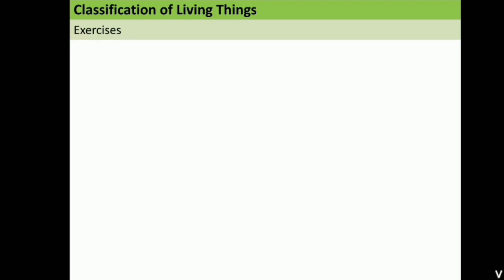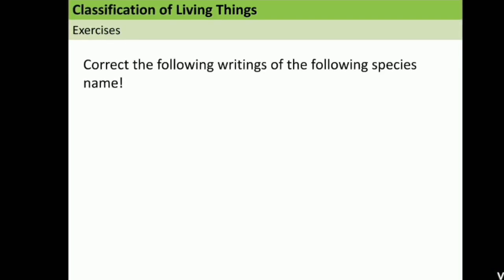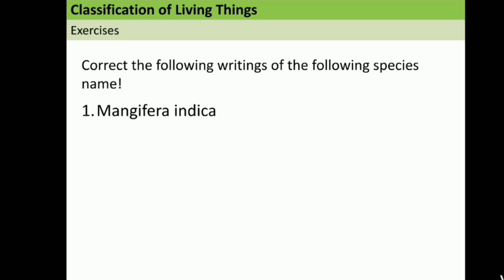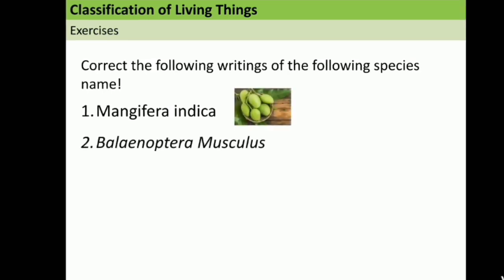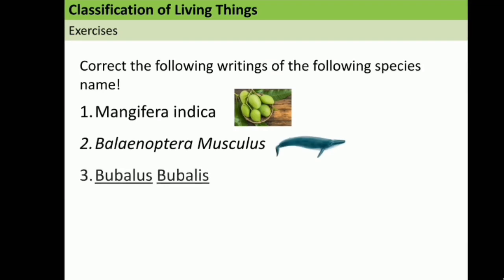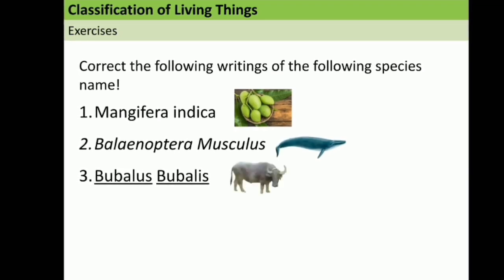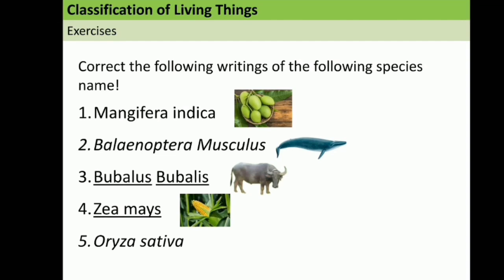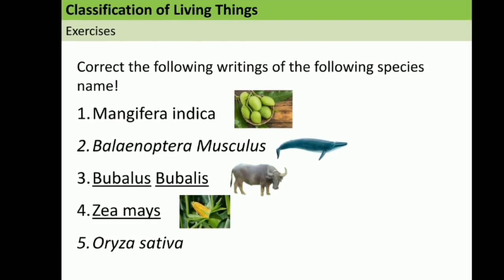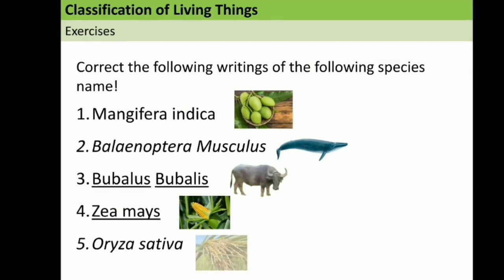Now let's try to do these exercises. The first exercise is correct the following writings of the following species name. The one Mangifera indica, Balaenoptera, of course, Bubalus bubalis, Zea mays, and Oryza sativa. Try to correct the writings of the names.